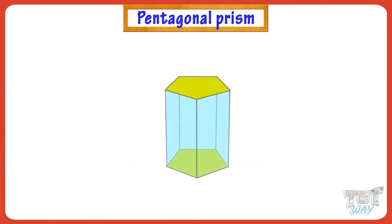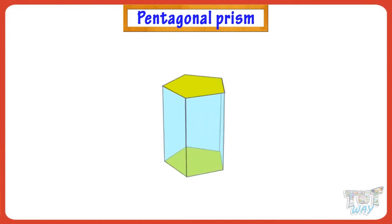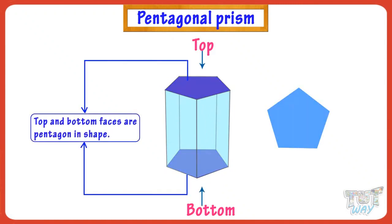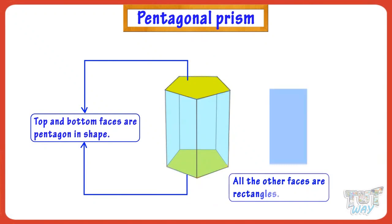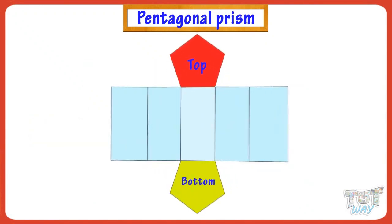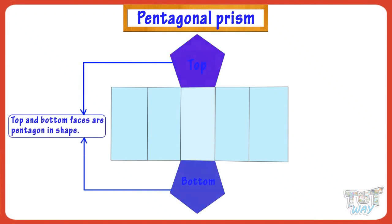Here we have a pentagonal prism. A pentagonal prism is a 3D shape in which the top and bottom faces are pentagon shape, and all the other faces are rectangles. Let's open it to see the shape of net it forms. This is the net of a pentagonal prism, where we can clearly see all the faces — its top and bottom faces are pentagonal, and all the other faces are rectangular.